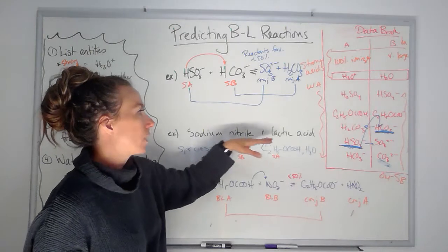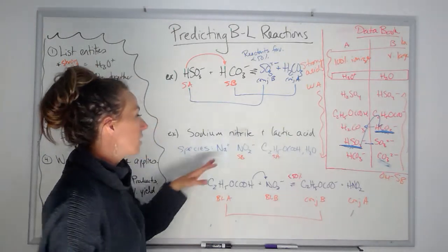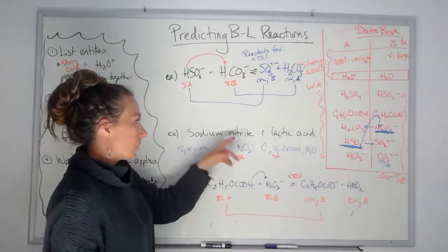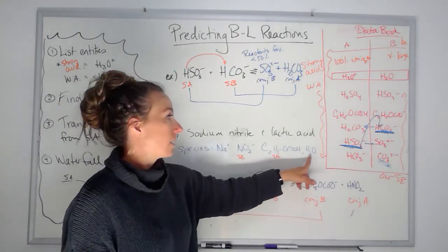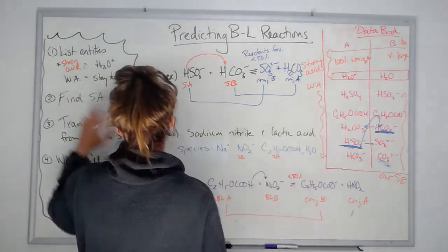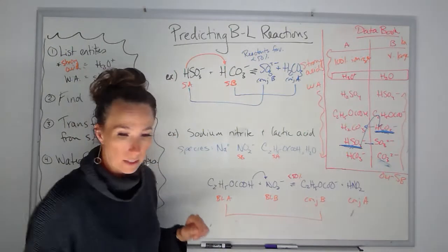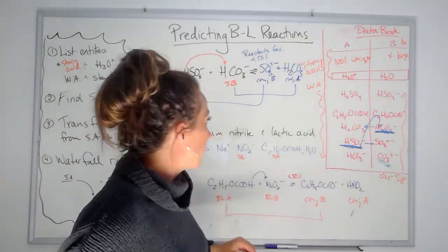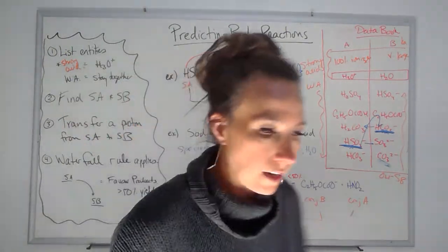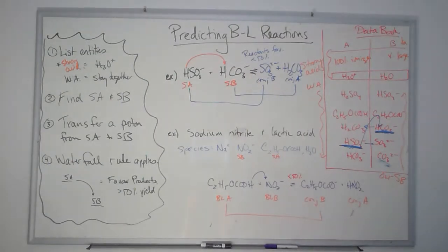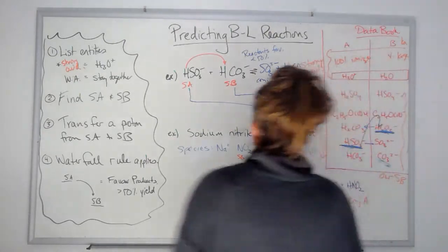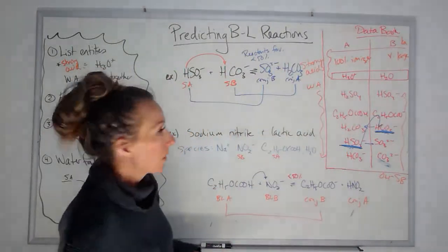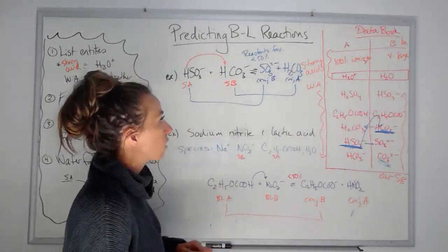Here's another example: sodium nitrite and lactic acid. My species are sodium, nitrite, lactic acid, and water. Lactic acid is a weak acid, so I kept it together. I put my finger and try to find my strongest acid.